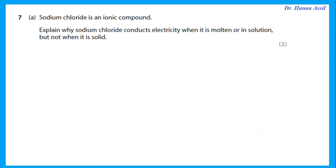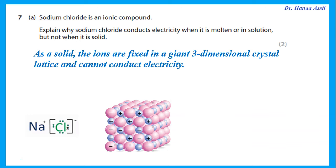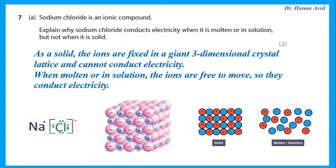Sodium chloride is an ionic compound. Explain why it conducts electricity when molten or in solution but not as a solid. As a solid, the ions are fixed in a giant three-dimensional crystal lattice and cannot move. When molten or in solution, the ions are free to move, so they can conduct electricity. Remember: in ionic compounds it is ions, not electrons, that carry the charge.